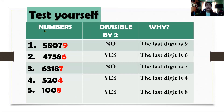So, we have number 1: 58,079. What is the last digit? Is 9 an even number? No. The last digit is 9 and it is not an even number, so this is an odd number. How about number 2? The last digit is 6. Of course, it is an even number. That's why it is divisible by 2.